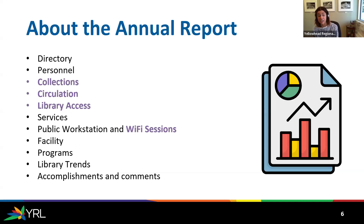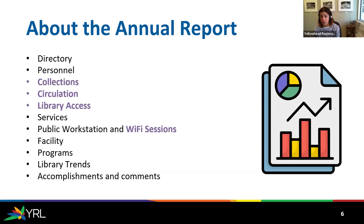Then we go on to questions about collections, circulation, library access, and services — including reference transactions, examination services, meeting space bookings, and information about the facility such as size, status, and ownership. Then programs: in-person, digital literacy, outreach, virtual, and take-home programs. There's a library trend question and a spot to share your successes and list accomplishments. The areas that YRL helps you the most are the bolded purple words: collections, circulation, library access, and Wi-Fi sessions — those are the ones I'm going to focus on today.